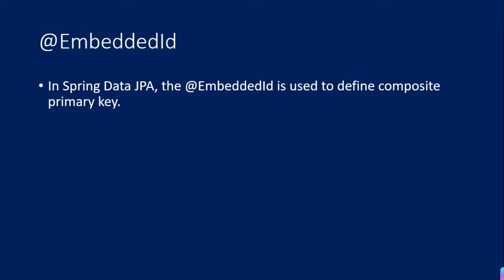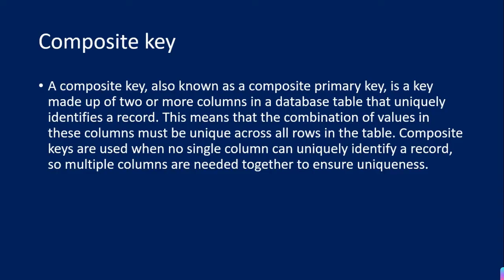So what exactly is a composite primary key? Whenever we create a table in a database, we always have a primary key — a key that can uniquely identify a record. Now suppose there is no single key which can uniquely identify the record. In that case, we combine two different keys and club them together to make a primary key. That combining of two different keys to make a primary key is called the composite primary key.